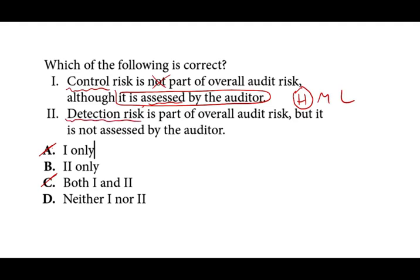Statement two says: detection risk is part of the audit risk, but it's not assessed by the auditor. That is correct — detection risk is not assessed, it's set by the auditor. The auditor sets detection risk at, say, 5%, 10%, or 2%. Setting it at 5% means we want to be 95% accurate. If set at 0%, we're taking no chances and auditing everything. Control risk is assessed; detection risk is set by the auditor.